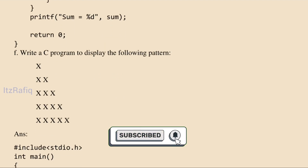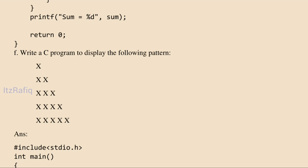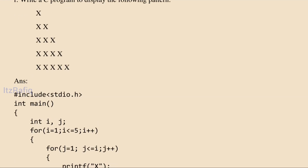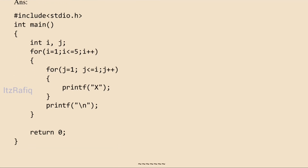For the pattern display question, the first line has 1 X, the second line has 2 X's, and there are 5 lines total. We use two variables i and j. The outer loop runs: i=1, i<=5. The inner loop runs: j=1, j<=i. When i=1, it prints 1 X. When i=2, j goes up to 2, printing 2 X's. When i=5, j goes up to 5, printing 5 X's. This produces the triangular pattern in C programming.